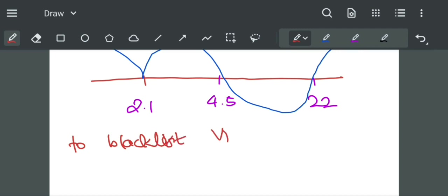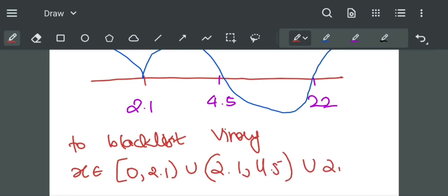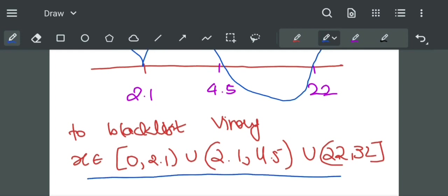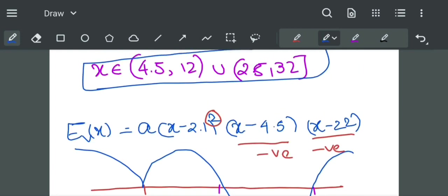To blacklist, we need x belonging to 0 to 2.1 union 2.1 to 4.5 union 22 to 32. Now we have to find the common points between this function.